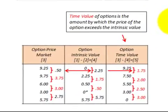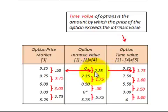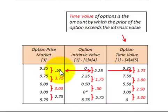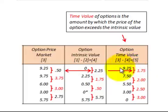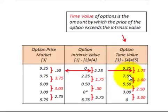To determine the time value of the option, first we determine the change for each period in the market value of the option, then the change for each period in the intrinsic value, and then we subtract the change in intrinsic value from the change in market value — that gives us the change in time value. In the first case, we had a $0.50 change in market value, subtract a $2.25 change in intrinsic value, and get a negative $1.75 change in time value. Starting with a time value of $9.25, subtracting $1.75 gives a new time value of $7.50.